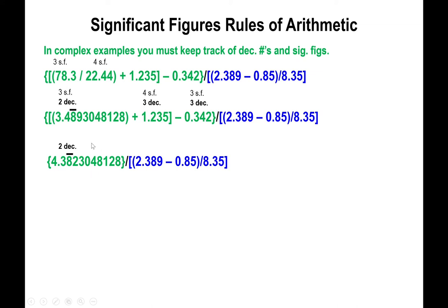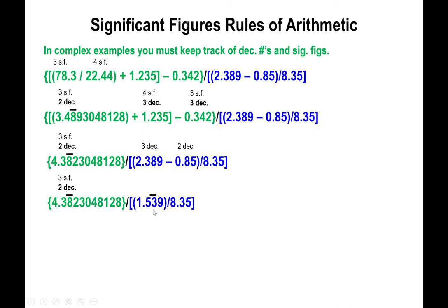Stopping at the second decimal place means this answer has three significant figures. Now before continuing with the main fraction, handle the denominator. Carry out the subtraction in the parentheses: 2.389 has three decimal places and 0.85 has two decimal places. When you subtract, your answer must have two decimal places — stopping at three — giving three significant figures. The second number in the denominator also has three sig figs.